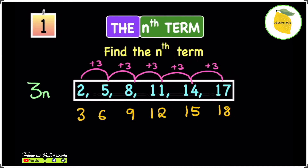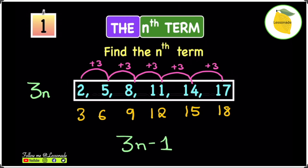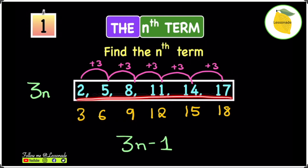All you have to do is subtract 1. To get from 3 to 2 you take away 1, from 6 to 5 subtract 1, from 9 to 8 subtract 1, from 12 to 11 subtract 1, from 15 to 14 subtract 1, and from 18 to 17 subtract 1. So minus 1 is the difference. Because we now know minus 1 is our difference, we write it next to 3n to give us 3n minus 1. The linear sequence is basically 1 taken away from the 3 times table, so the nth term is 3n minus 1.